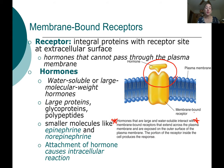Other examples include large proteins, glycoproteins, and polypeptides. Some smaller molecules like epinephrine and norepinephrine also bind to a receptor on the outside of the cell. When they bind to this receptor, they cause changes to occur inside the cell. We're going to talk about how these changes occur today.